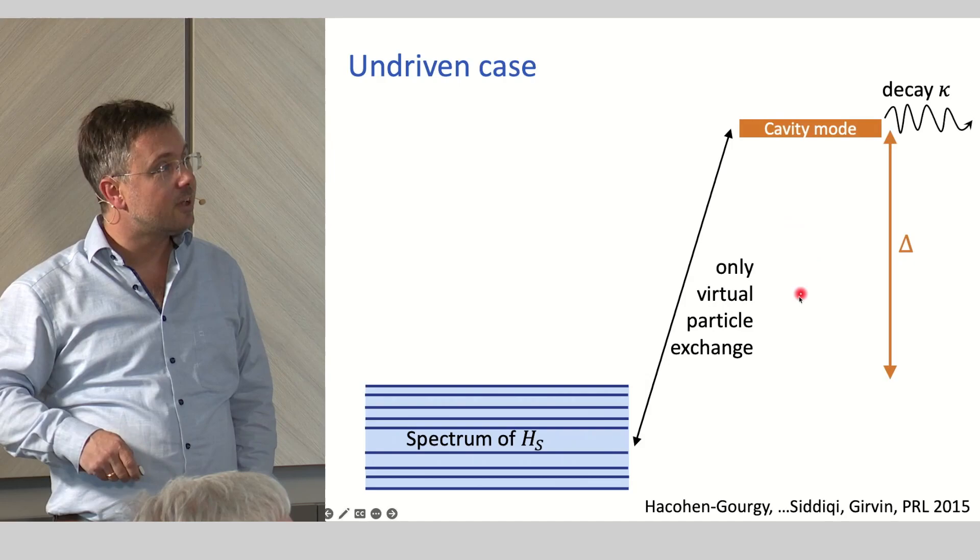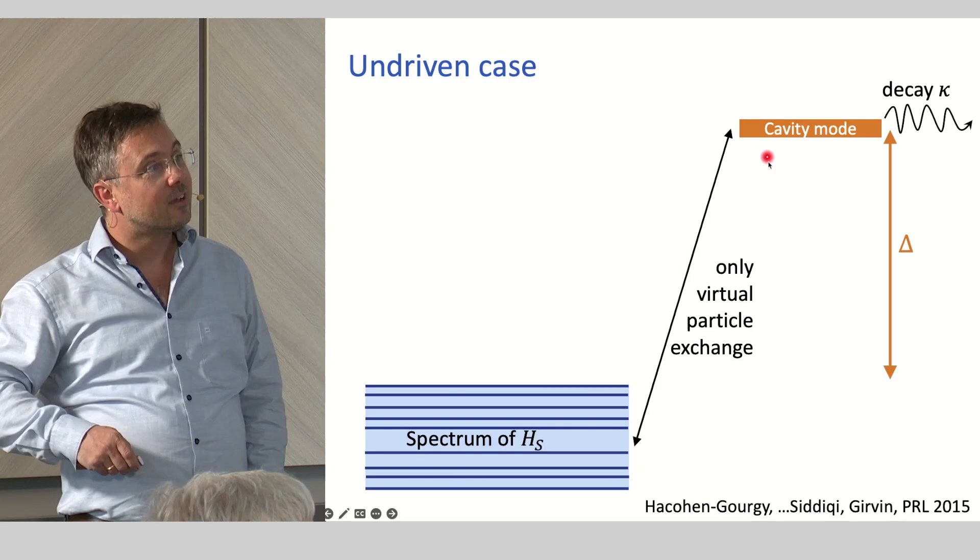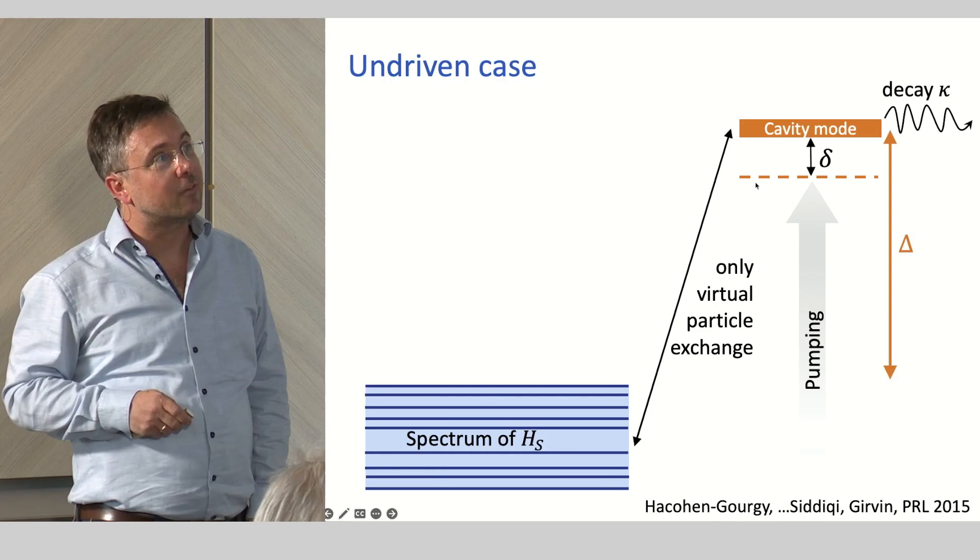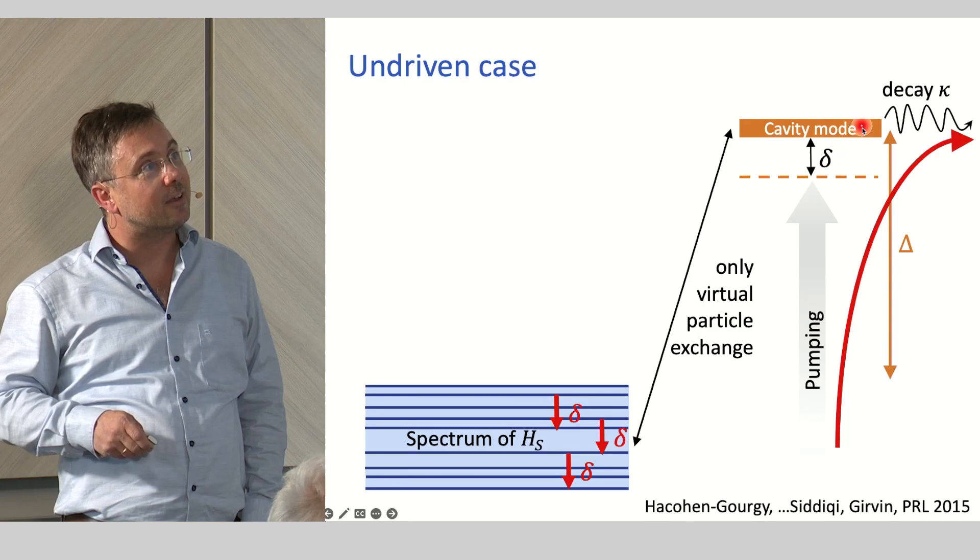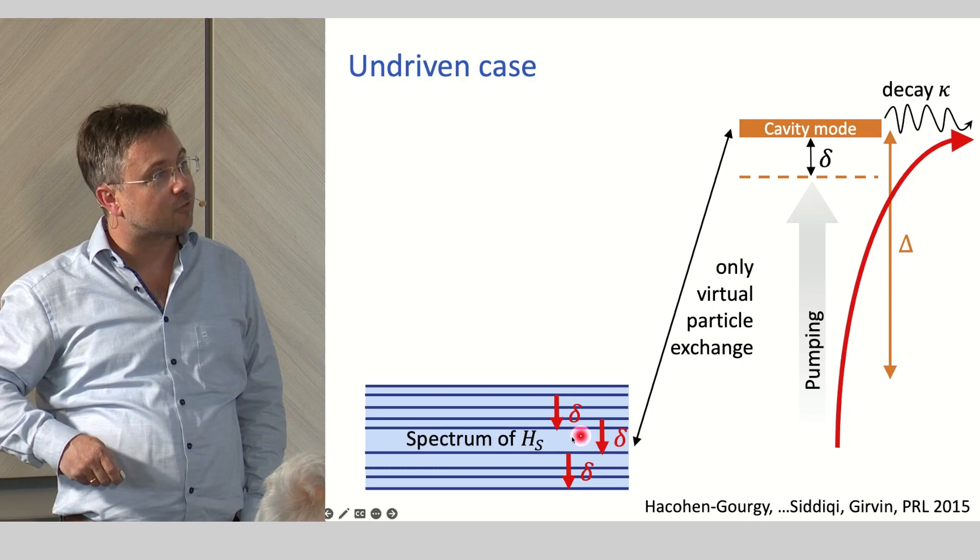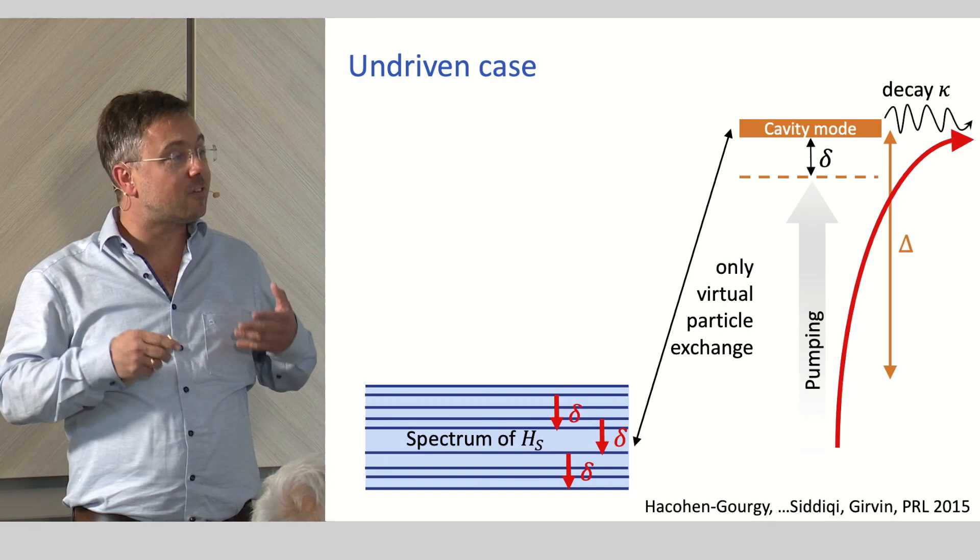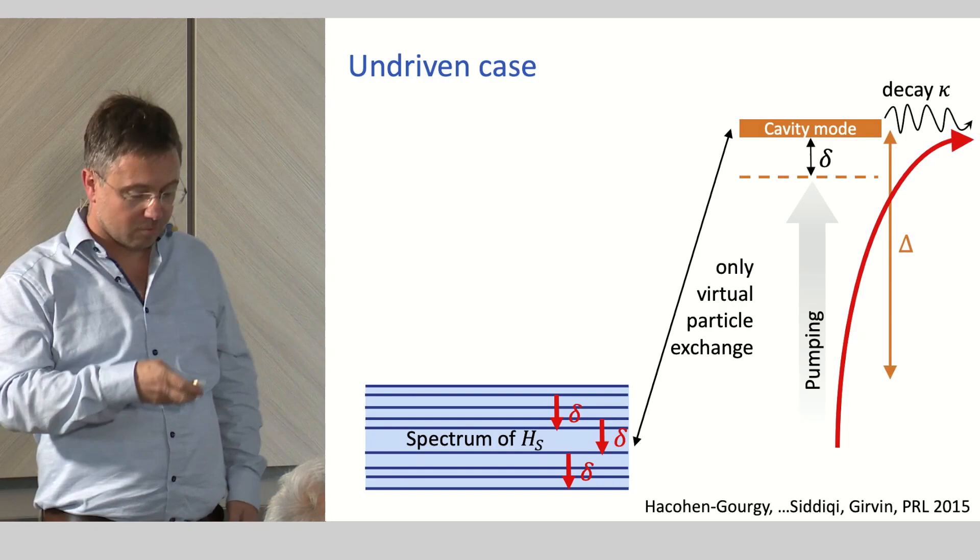First of all, how does this reservoir engineering work? You have your spectrum of your system. You have it coupled to a cavity mode in the so-called dispersive regime, where it's energetically offset. So there is only, at most, a little bit of virtual particle exchange. Now you pump this cavity mode in a red-detuned fashion. So whenever this mode absorbs a photon and it decays, this process has to borrow an energy delta from the system. And in this way, you can bring the system down to its low energy state, to its ground state, by putting sufficiently many suitable reservoirs. This is something which works in small systems. You cannot scale it up to really very large systems.